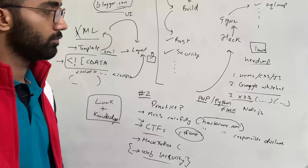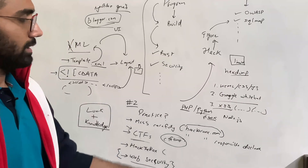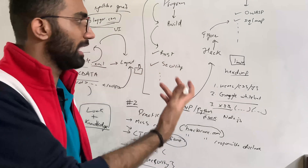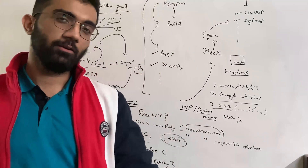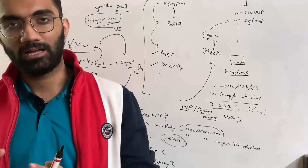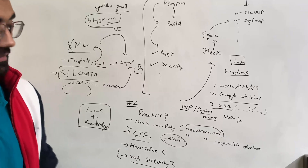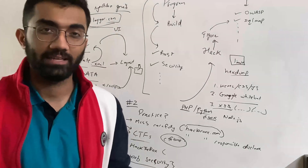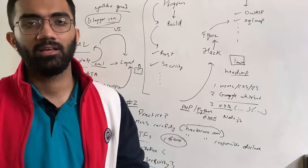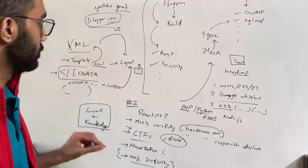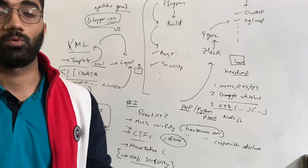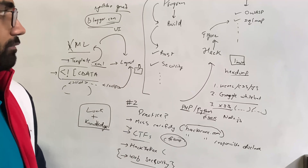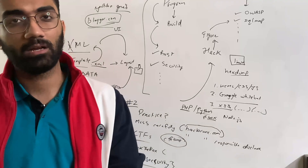To summarize: hacking is mostly a mix of luck and the correct knowledge at the right moment — unless the system is truly badly built or you have advanced exploitation tools. If you have great knowledge but the system has minimal attack surface, there's not much you can do. And relying purely on luck won't get you anywhere either. This little bit of structure — not a complete roadmap — should give you a good idea of how to start learning about hacking.